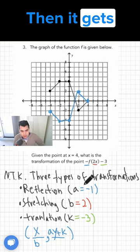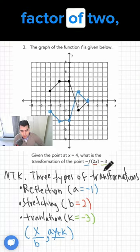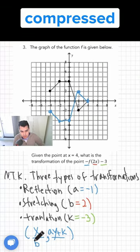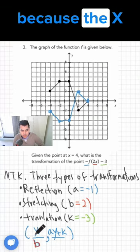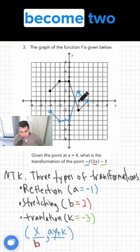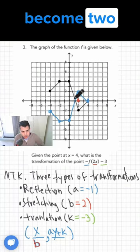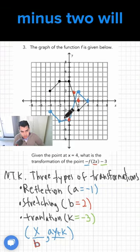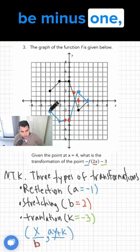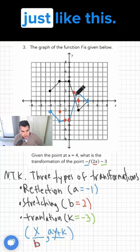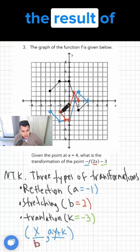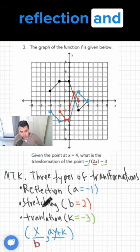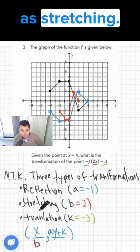Then it gets stretched by a factor of 2, or in this case compressed, because the x coordinate is getting divided by 2. 4 will become 2, 2 will become 1, 0 will be 0, -2 will be -1, -4 will be -2, just like this. So that is the result of reflection and compressing, also known as stretching.